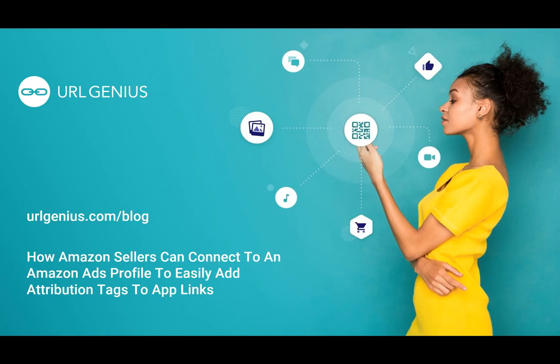That concludes our video about how Amazon sellers can easily connect an Amazon Ads profile to add attribution tags to their app links. Stay tuned to this YouTube channel for more tips and best practices, and make sure to check out our blog at urlgenius.com/blog.